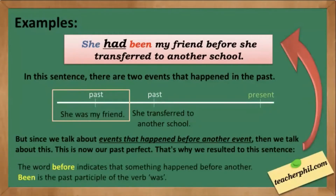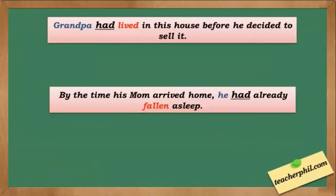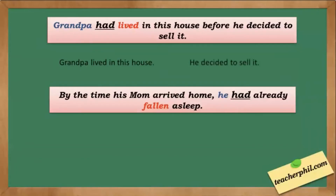'Been' is the past participle of the verb 'was.' Another example: Grandpa had lived in this house before he decided to sell it. The two past events in this sentence are 'grandpa lived in this house' and 'he decided to sell it.' Grandpa lived in this house is our past perfect, that is why our sentence is: Grandpa had lived in this house before he decided to sell it.